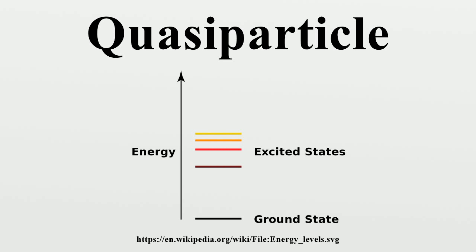Bogoliubov quasi-particles arise in superconductors. Superconductivity is carried by Cooper pairs, usually described as pairs of electrons that move through the crystal lattice without resistance. A broken Cooper pair is called a Bogoliubov quasi-particle. It differs from the conventional quasi-particle in a metal because it combines the properties of a negatively charged electron and a positively charged hole. Physical objects like impurity atoms, from which quasi-particles scatter in an ordinary metal, only weakly affect the energy of a Cooper pair in a conventional superconductor. In conventional superconductors, interference between Bogoliubov quasi-particles is difficult for an STM to see because of their complex global electronic structures. However, high-Tc cuprate superconductors are another matter.